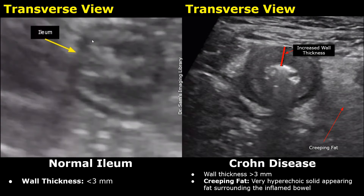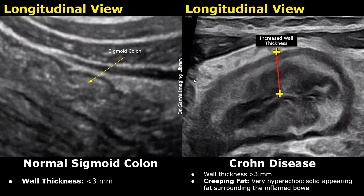This image shows the normal ileum in the transverse plane. The normal wall thickness should be less than 3 millimeters. This image shows a thickened wall surrounded by hyperechoic solid-appearing fat — this is called creeping fat. This image is of the sigmoid colon in the longitudinal plane. The normal colon is difficult to see on ultrasound. In the image on the right, we see a sigmoid colon with increased wall thickness in a patient with Crohn's disease. In this case, the wall stratification is preserved and creeping fat is present.